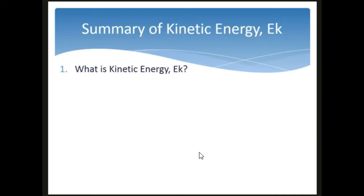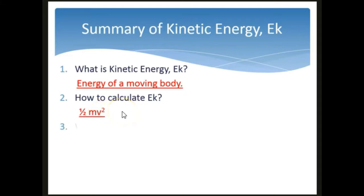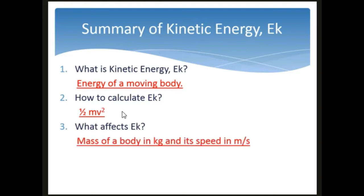In summary: kinetic energy is the energy of a moving body. The amount of kinetic energy is calculated by the formula ½mv², where m represents mass and v represents speed. Note that the 2 here represents v squared, not v times 2. Two things affect kinetic energy: the mass of the body in kilograms and its speed in meters per second.